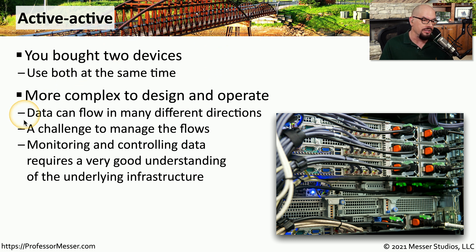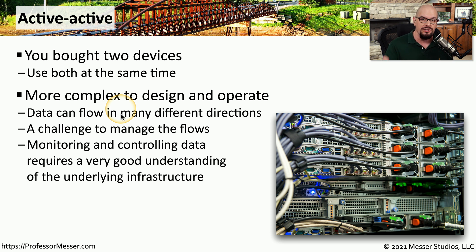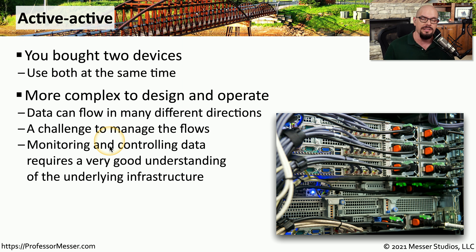For example, we have to consider that data can flow in many different directions. Some traffic may flow through one device going one direction, but through a different device when heading the other direction. This can be a challenge if you need to manage flows, especially if it's a security device like a firewall. This means you'll need to monitor and control where the data is going, not only through those active-active devices, but also the other devices on either side of those redundant systems.